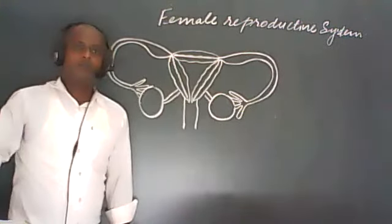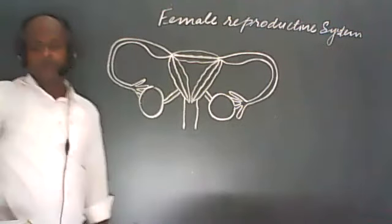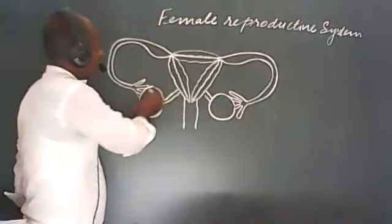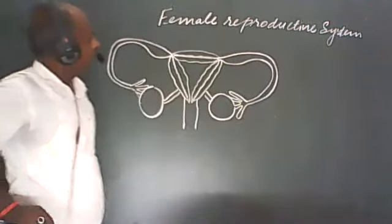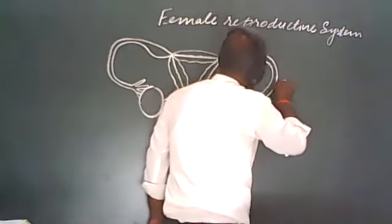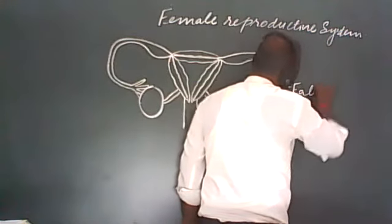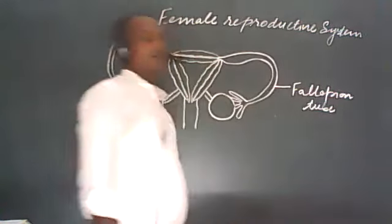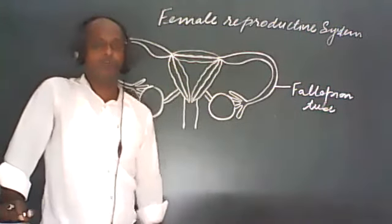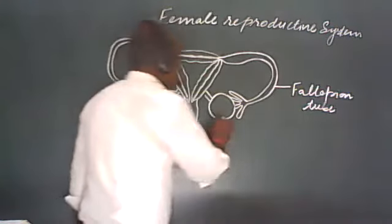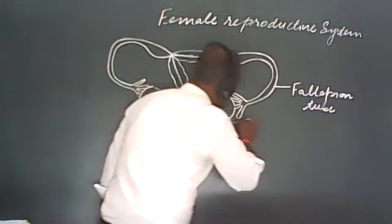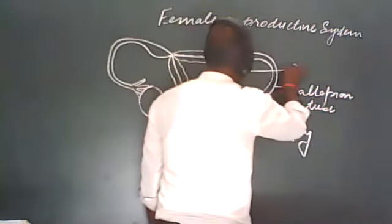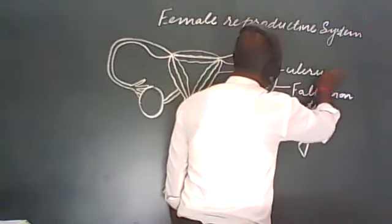Now the figure is complete. We have to label the complete figure. If we see the figure, there are different types of structures — these are the female reproductive organs, which have different parts. We have to label the diagram. This is the fallopian tube, also called the oviduct. In the fallopian tube there are many parts — these are the finger-like outgrowths called fimbria. This is the ovary, and this is the uterus.